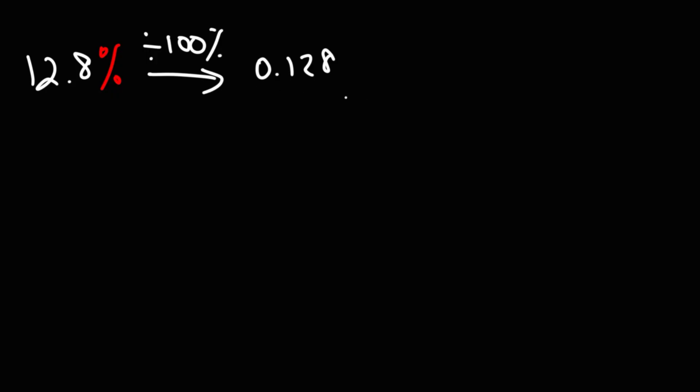Now this goes to the nearest thousandths. So we're going to put it over 1 and multiply the top and bottom by 1,000 to get rid of the decimal. 0.128 times 1,000, basically got to move the decimal point 3 units to the right. That's going to give you 128. And on the bottom, 1 times 1,000 is 1,000.